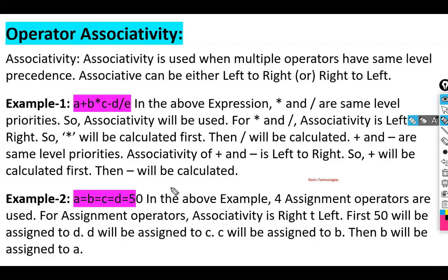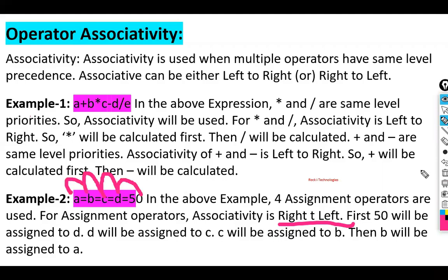In the second example, a = b = c = d = 50, four assignment operators are used. The associativity is from right to left. First, 50 is assigned to d, then d's value is assigned to c, c is assigned to b, and b's value is assigned to a.